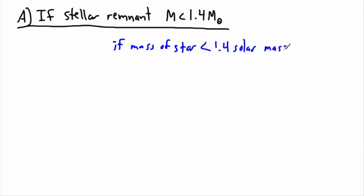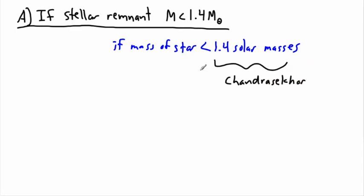That 1.4 solar masses is actually known as the Chandrasekhar limit, named after a really clever Indian astrophysicist who did many things in astrophysics. One of the things he figured out was that this mass of a stellar remnant tells you basically what's going to happen. It was all about how stable things could be — looking at white dwarfs, electron degeneracy pressure, and what would really happen. The result is: if the mass of the remnant is less than 1.4 solar masses, then it goes to a white dwarf.